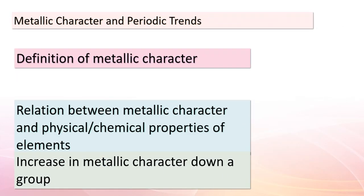Today, we're delving into a fascinating aspect of the periodic table known as metallic character. The greater an element's metallic character, the more it behaves like a metal — linked to both physical and chemical properties. As we journey through the periodic table, we notice that when we move down a group, metallic character generally increases; as we traverse from left to right across a period, metallic character tends to decrease. Let's explore the intricate connection between electron configurations and the distinctive properties of metals, non-metals, and metalloids.